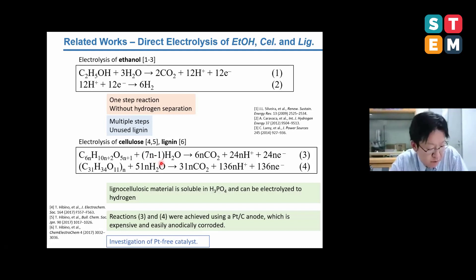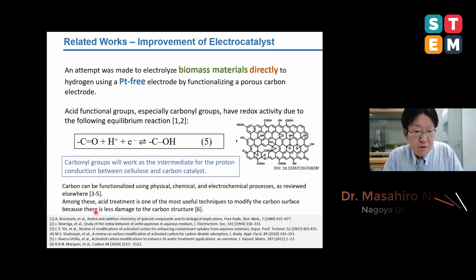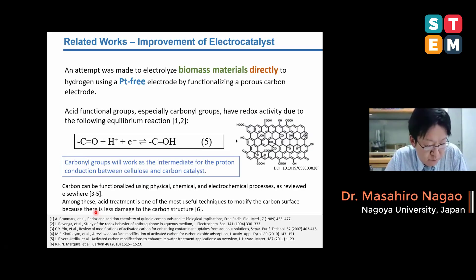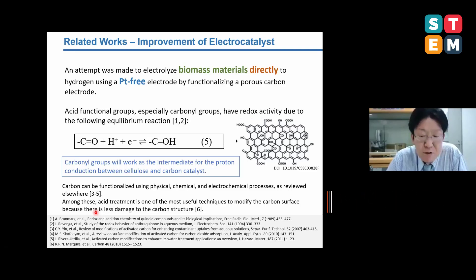Our group reported that lignin from materials is soluble in phosphoric acid and can be electrolyzed to hydrogen according to these reaction equations. In these reports, we used platinum-carbon catalysts, which will increase the cost of this technique because platinum is used. So we have tried to investigate platinum-free catalyst. As a candidate, we focused on carbons containing carbonyl groups on the surface as shown in this figure. The carbonyl groups will work as intermediates for the proton conduction between cellulose and carbon catalysts.